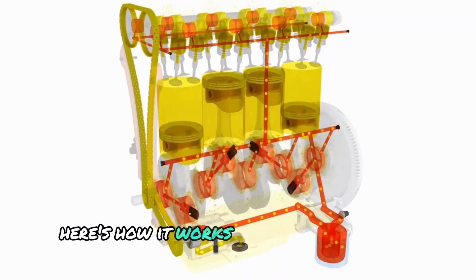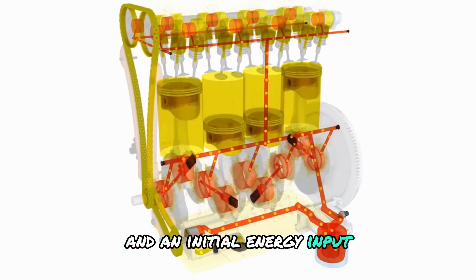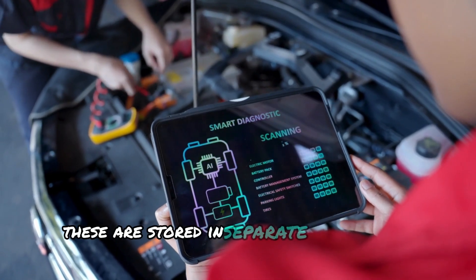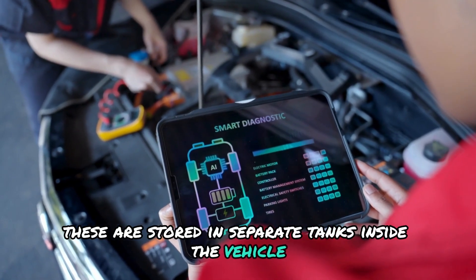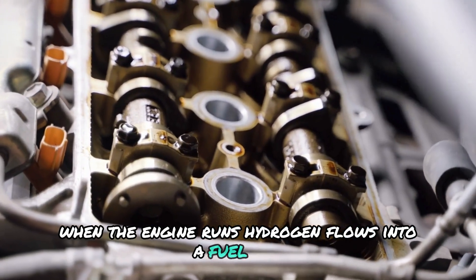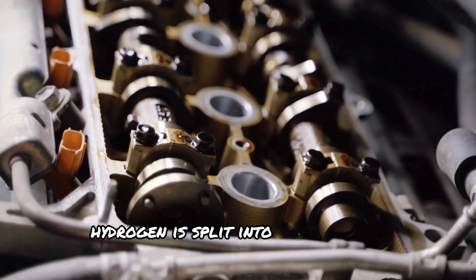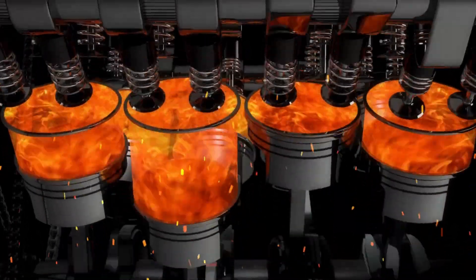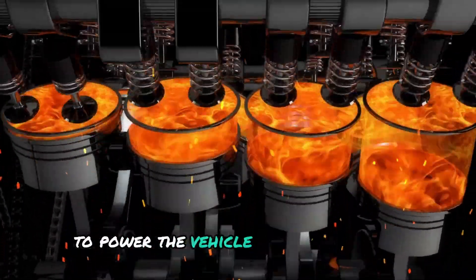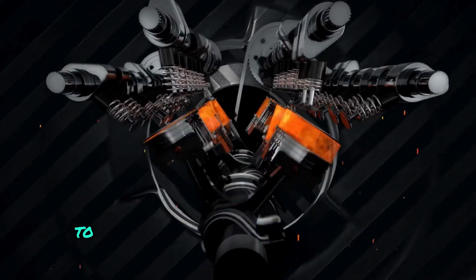Here's how it works. Water is added to the system, and an initial energy input splits it into hydrogen and oxygen. These are stored in separate tanks inside the vehicle. When the engine runs, hydrogen flows into a fuel cell. Inside the cell, hydrogen is split into protons and electrons. The electrons create an electric current to power the vehicle, power the motor, while the protons combine with oxygen to form water vapor.